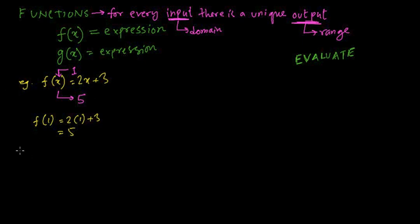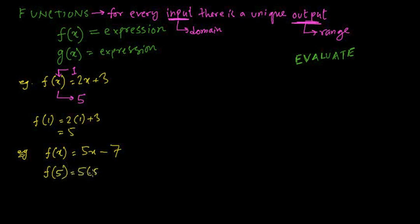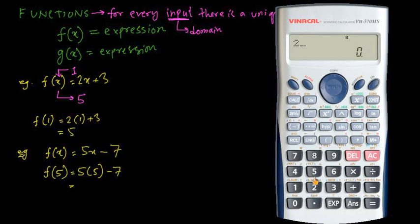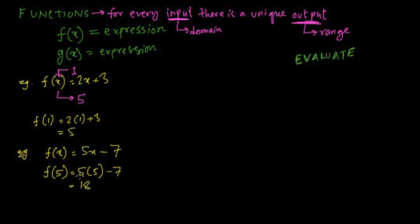Let's do another example. Suppose f(x) = 5x − 7 and you have to evaluate f(5). That would be 5×5 = 25, minus 7. So 25 − 7 = 18. That's how you evaluate a function.